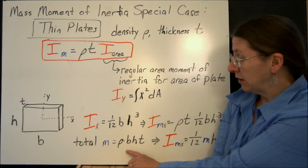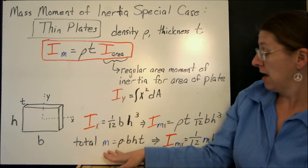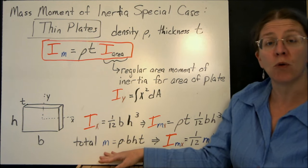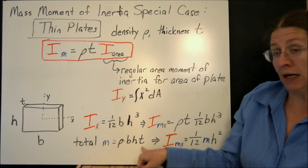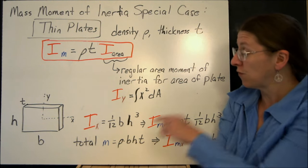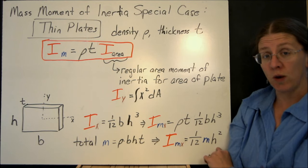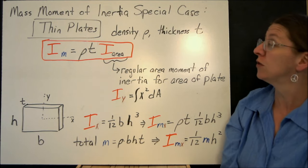And if you remember, for any rectangular prism like this, the total mass of that would be ρ times the volume. So you've got ρ times bht, which means that the mass moment of inertia about the x-axis for this thin rectangular plate is 1/12 mh², which is actually what you would find if you look that up in a table.